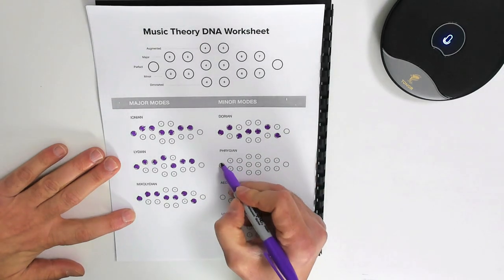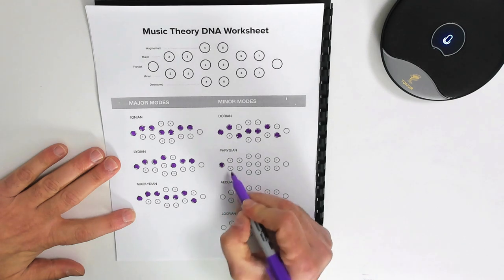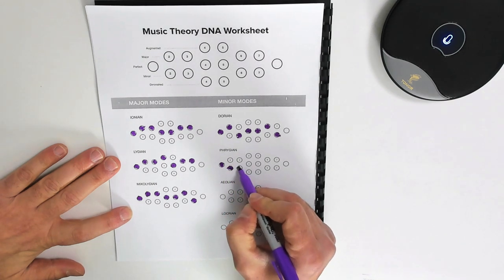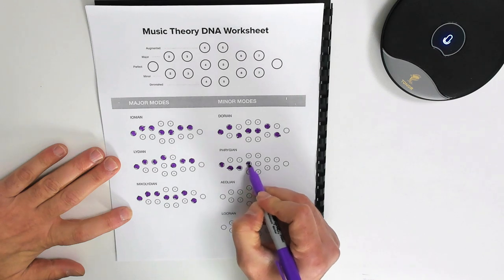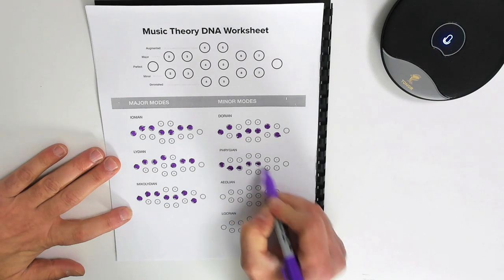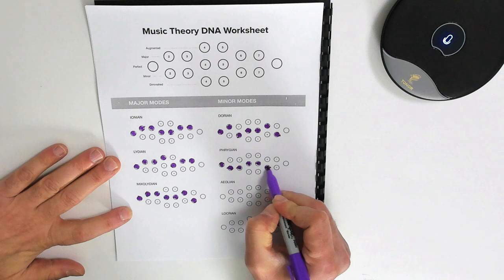Phrygian, one, a minor second, a minor third, perfect fourth, perfect fifth, minor sixth, and minor seventh.